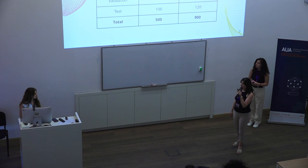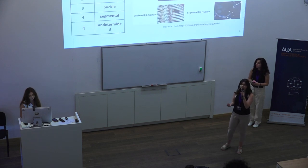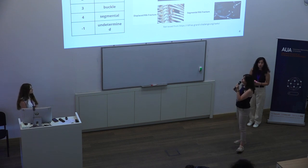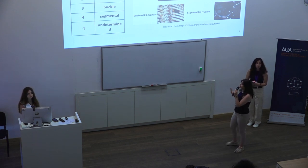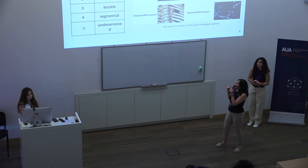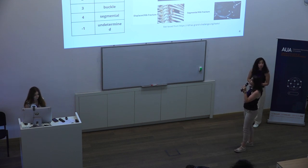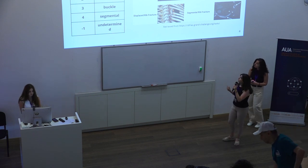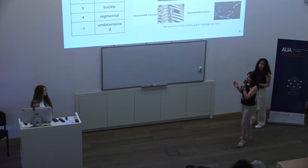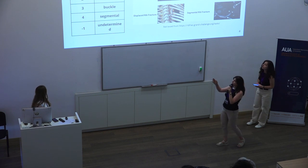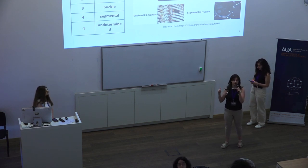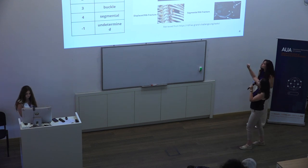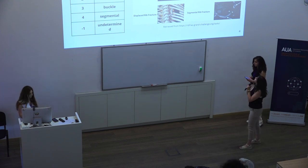Our data had accompanying labels in NIfTI format. We had label codes from minus 1 to 4: 0 was for background, 1 for displaced fractures, 2 for non-displaced fractures, 3 for buckle fractures, and 4 for segmental fractures. Minus 1 was also a fracture whose type cannot be determined. Here you can observe the fracture types in this picture.